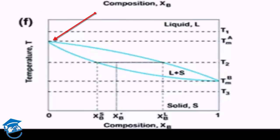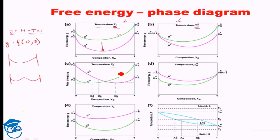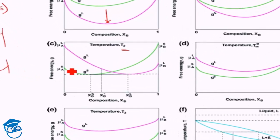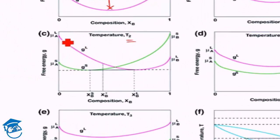Now at temperature T2, what we see is that the solid curve is like this and the liquid curve is like this. The solid curve is not at all composition above the liquid curve. At some region, from here to here, the solid free energy is less. From here to here, the liquid free energy is less.